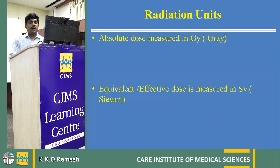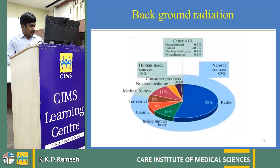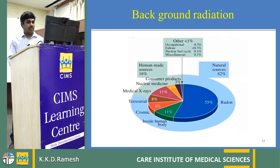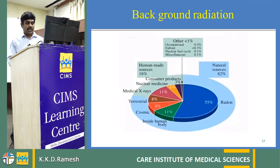For measuring radiation, the radiation units used are Gray, which is used for absolute dose measurement, and Sievert, which is used for effective dose measurement. Radiation is also present in the environment, called background radiation. Around 82% of background radiation comes from natural sources — the majority from radon gas and other sources like uranium, thorium, potassium in the earth, and cosmic rays from the solar system.